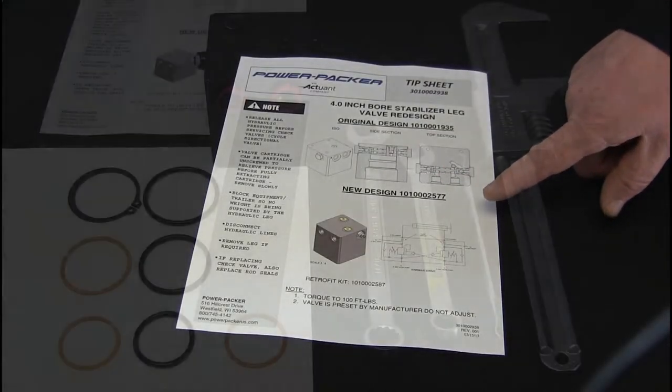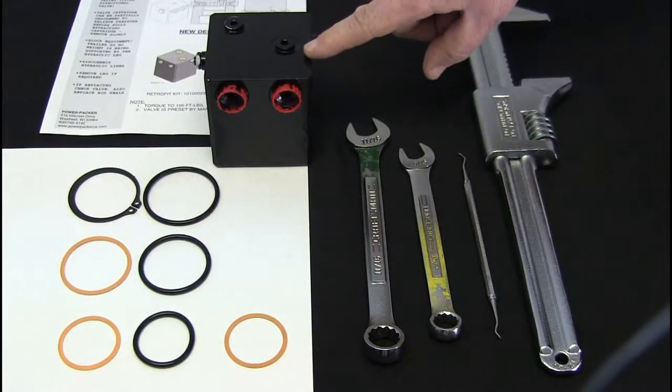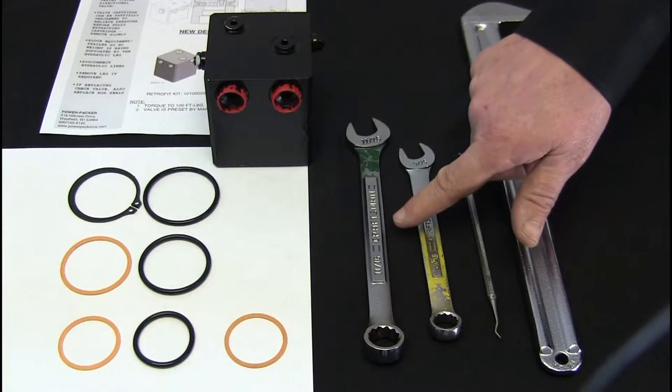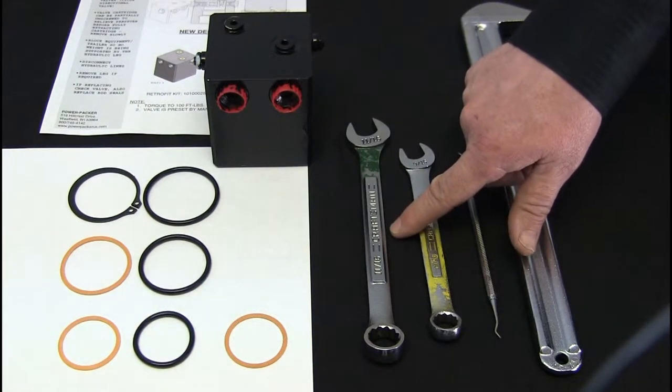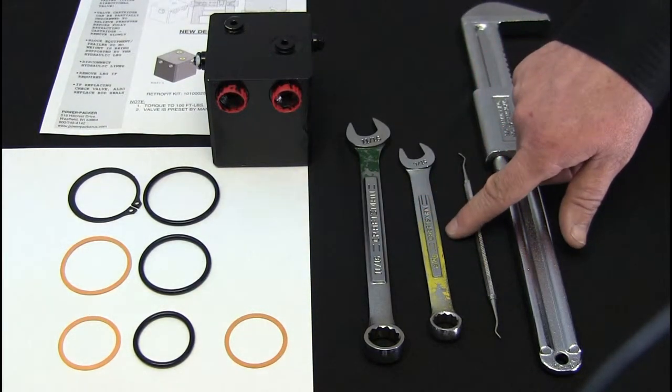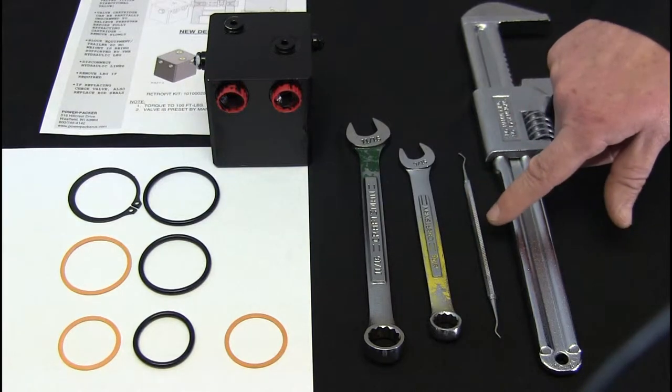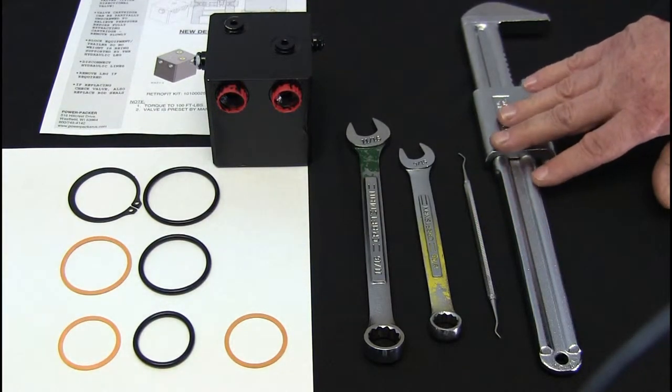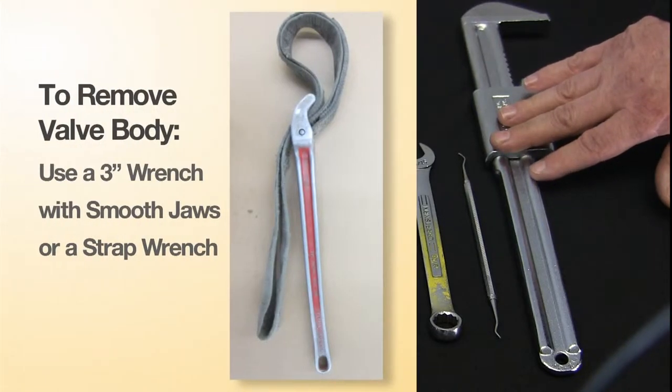This is the tip sheet, this is the valve body, this is the seal kit, this is an 11/16 combination wrench, this is a 9/16 combination wrench, this is a dental pick, and this is a three inch wrench to remove the valve body.